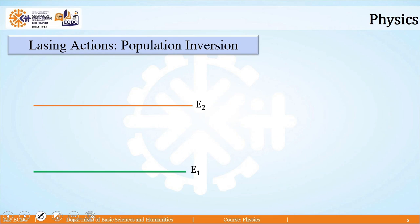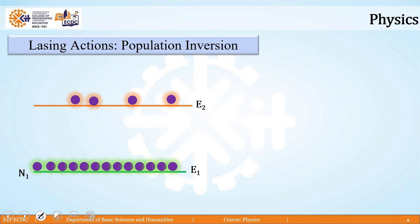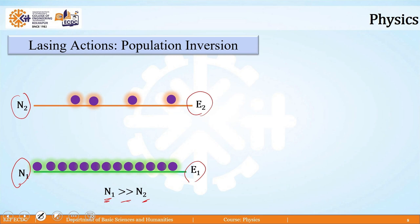To understand this, let us consider a two-energy-level diagram. Atoms try to remain in the ground energy level, so their number is more in the ground energy level. We are talking about the population of atoms. This population is greater in the lower energy level E1 compared to the number of atoms in the excited energy level E2. Let N1 be the population in energy level E1 and N2 in energy level E2. At normal equilibrium conditions, N1 is much greater than N2.